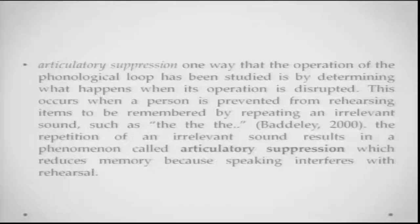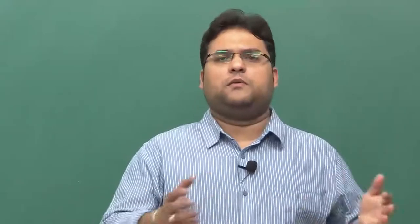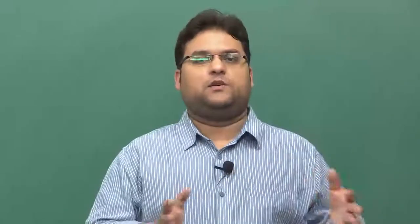Another important phenomenon is articulatory suppression, one of the ways in which the operation of the phonological loop can be disrupted. This occurs when a person is prevented from rehearsing verbal information by being asked to repeat an irrelevant sound. For example, if asked to remember a list of phone numbers while simultaneously repeating 'da da da' or 'ba ba ba,' the rehearsal space for the numbers is blocked — resulting in what is called articulatory suppression. You cannot maintain too much verbal information at the same time in the phonological loop.